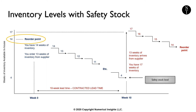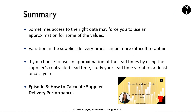Reorder points and safety stock levels are useful calculations to better manage your inventory, but sometimes access to the right data may force you to use an approximation for some of the values. Most companies can easily obtain daily or weekly sales data; it's the variation in supplier delivery times that is more difficult to obtain. While you may choose to use the supplier contracted lead time as an approximation, I do recommend studying your lead time variation at least once a year, as these times tend to vary quite a bit as different industries see changes in demand. For more information on studying supplier delivery times, watch episode 3 in this video series called How to Calculate Supplier Delivery Performance.